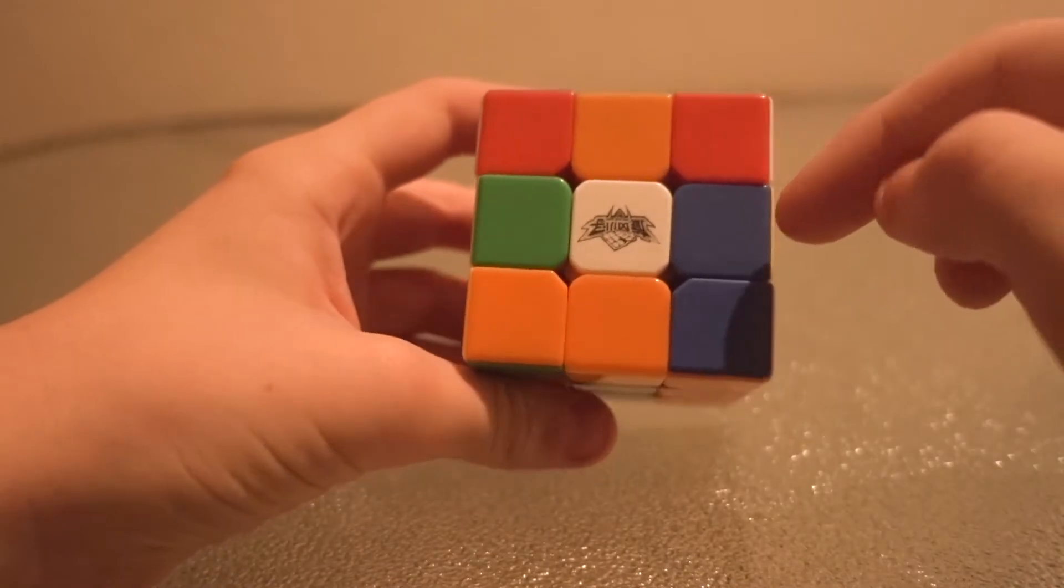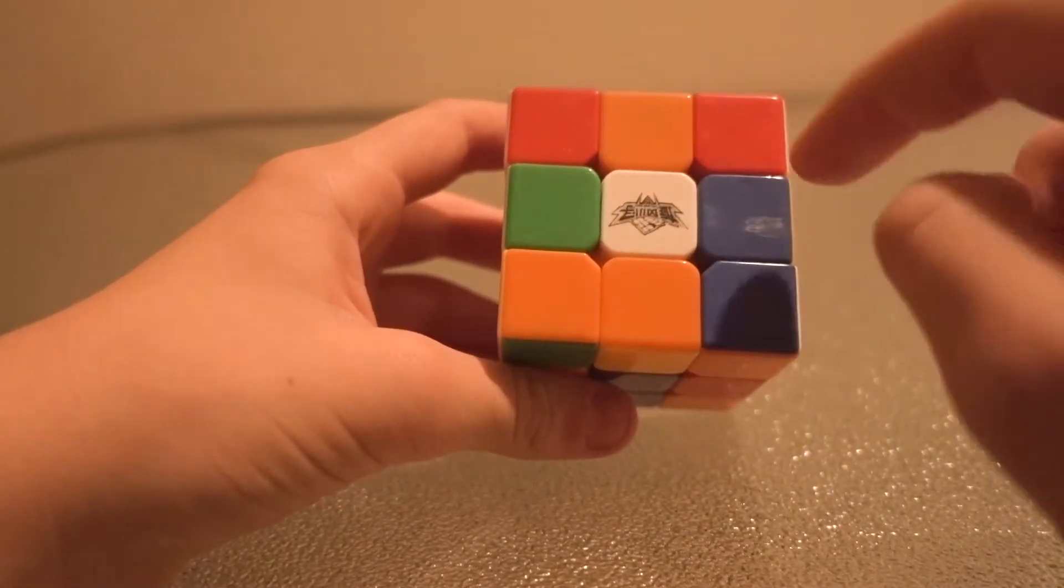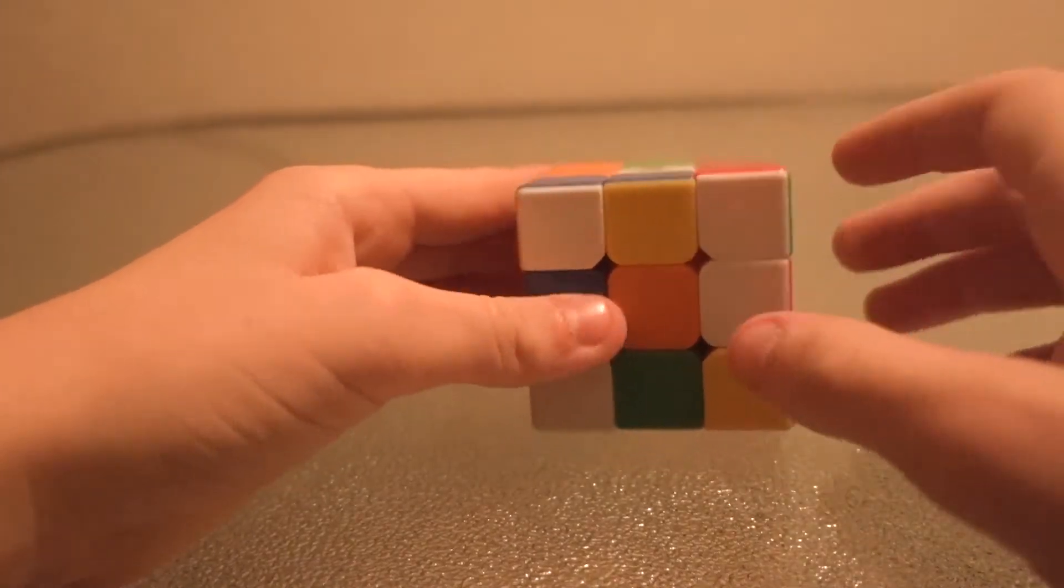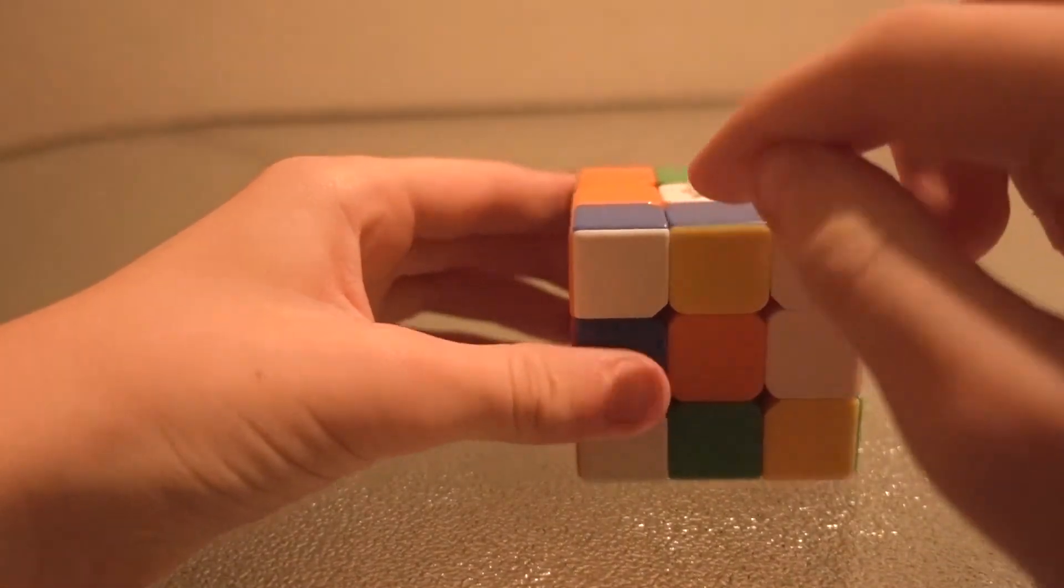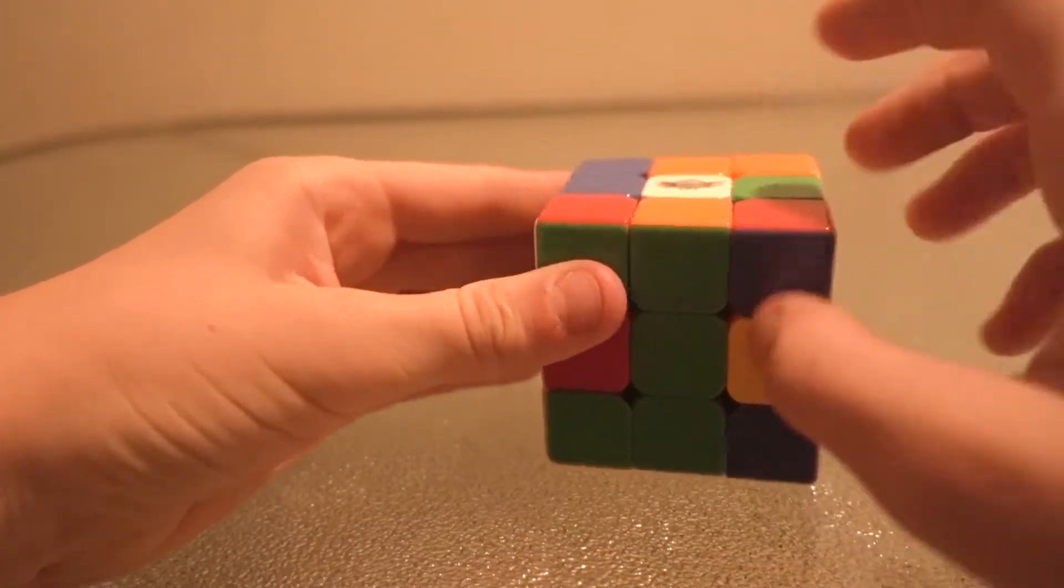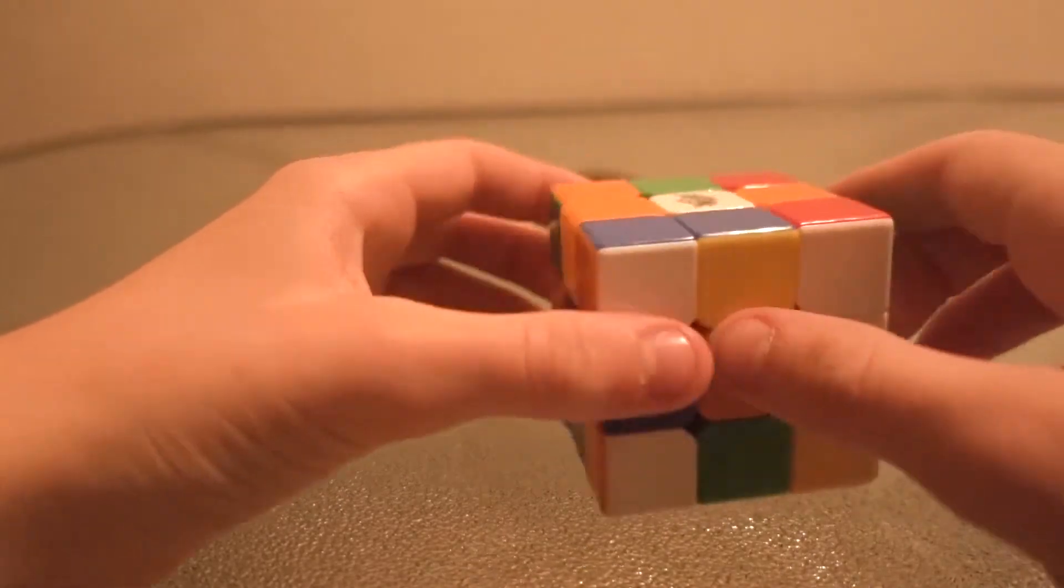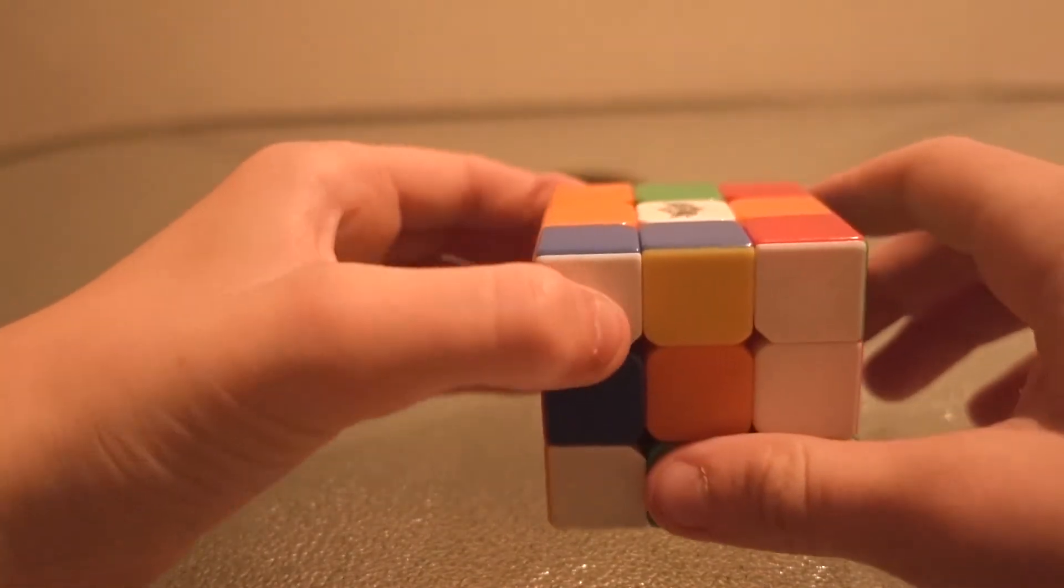So in this video I'm going to be showing you how to get all of these white matching their colors. So this would be white and orange, green and white, red and white, and blue and white. And we won't worry about the bottom just yet.